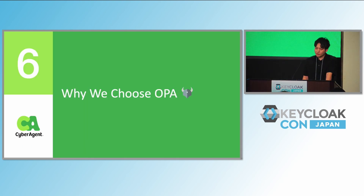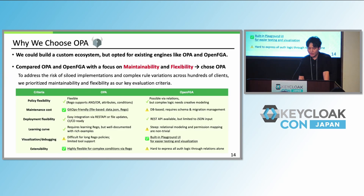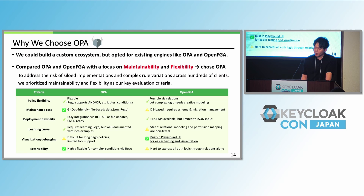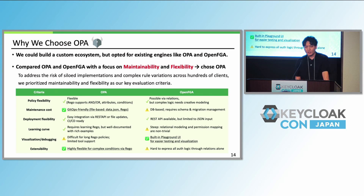Why did we choose OPA? We compared OPA and OpenFGA. OPA was more flexible and maintainable for our use case. While OpenFGA had better visualization, OPA's Rego language gave us more power. OPA also fits our GitOps workflow better and doesn't require DB schema management.